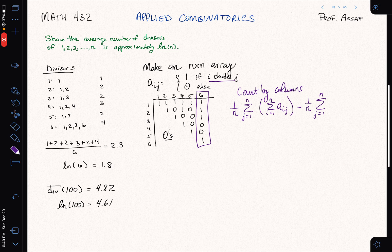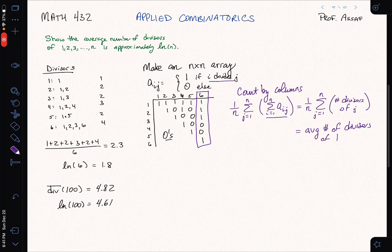So what am I counting when I do this inner sum? This is just the number of divisors of j. And I add that up for all j and divide by n. So by definition, this is the average number of divisors of 1, 2, all the way up to n. That's the thing that we want to count. And so when you're counting in two ways, if one side is the thing you wanted to count, that's great. The other side will be your answer, your formula.